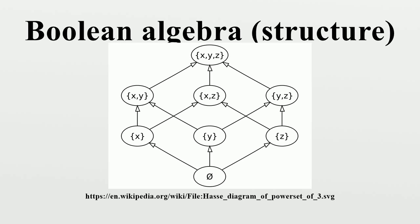This ring has the property that a · a = a for all a in A. Rings with this property are called Boolean rings.